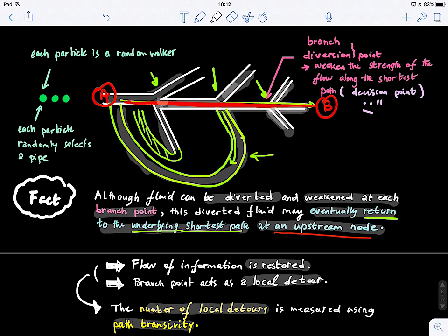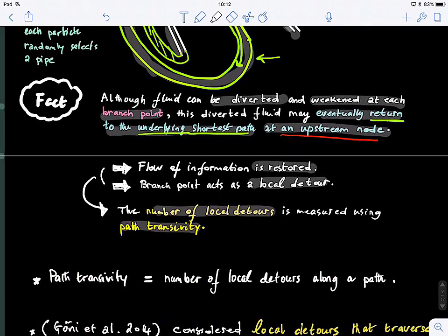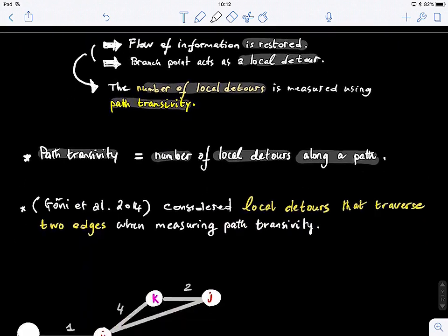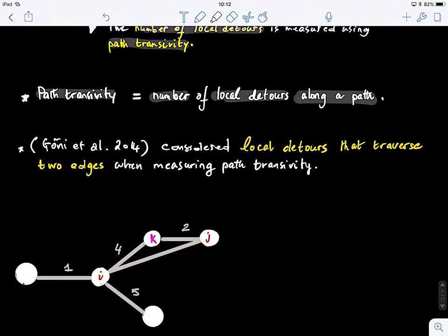Path transitivity is basically measuring the number of local detours in a graph. It is defined as the number of local detours along a path. Goni and co-authors considered local detours that specifically traverse only two edges when measuring path transitivity — this is to simplify the computation.